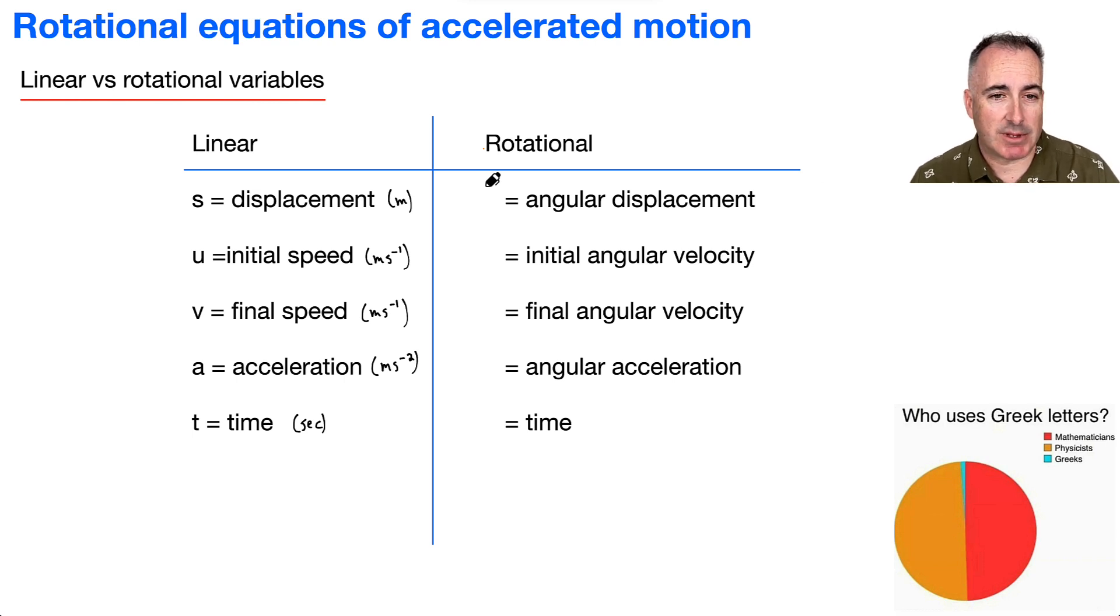And so instead of displacement, if you always just consider that delta theta, and this here is going to be in radians, for example, so just rad for short. Then instead of u for initial speed in meters per second, we're going to have omega i.